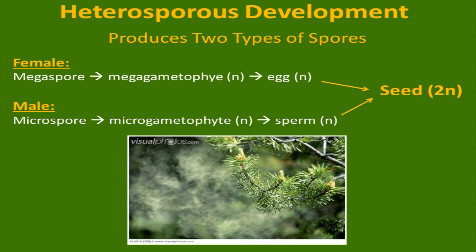In previous phyla of plants, we discussed homosporous states where the spores are all the same. Gymnosperms have heterosporous development — they produce two types of spores. A female has what's called a megaspore, very large — sometimes a centimeter in length — called the megagametophyte, and it's the egg. The male has a microspore, called the microgametophyte, and it has sperm in it. The sperm is inside the pollen, the pollen being the microgametophyte. When they unite, that makes a seed, which is now diploid.